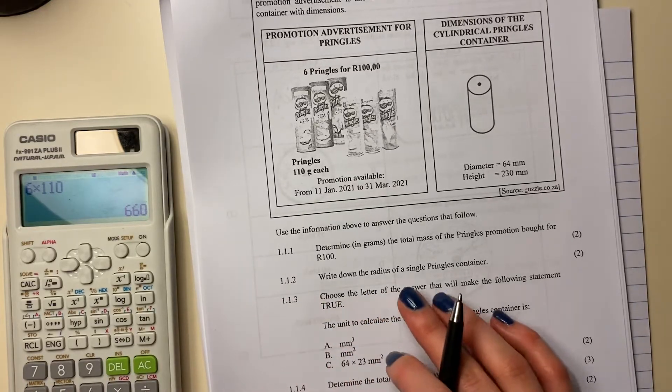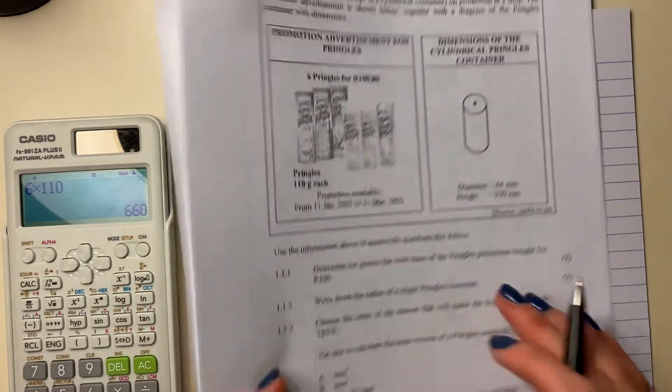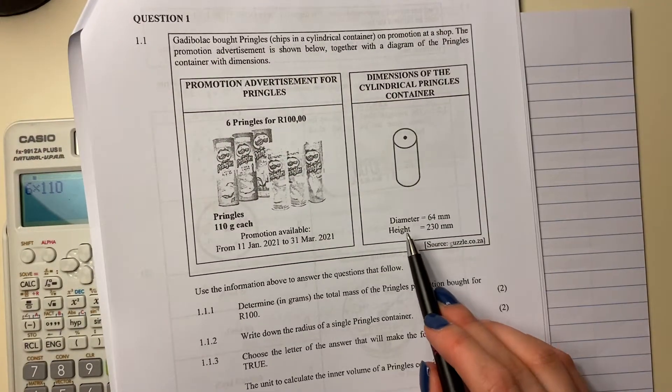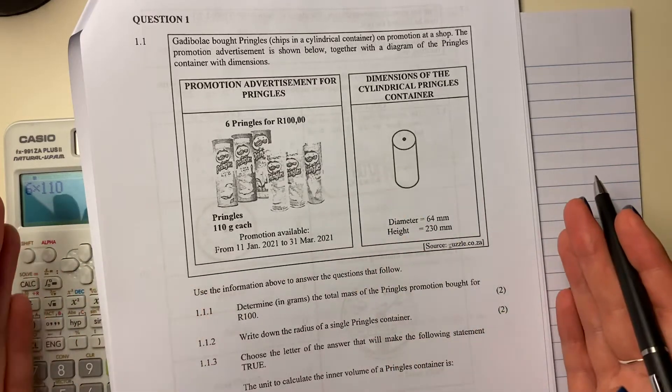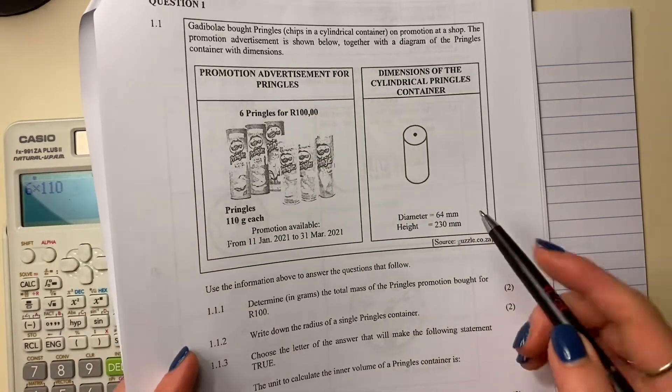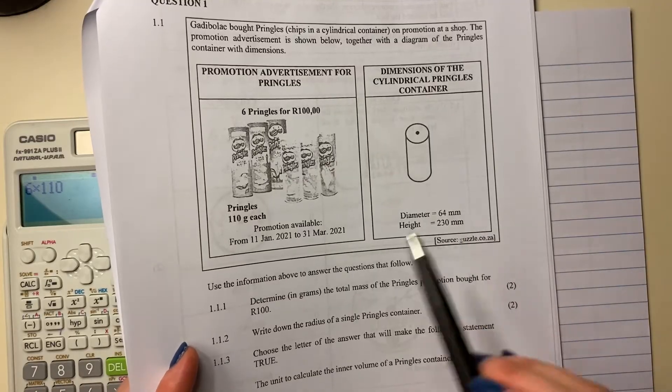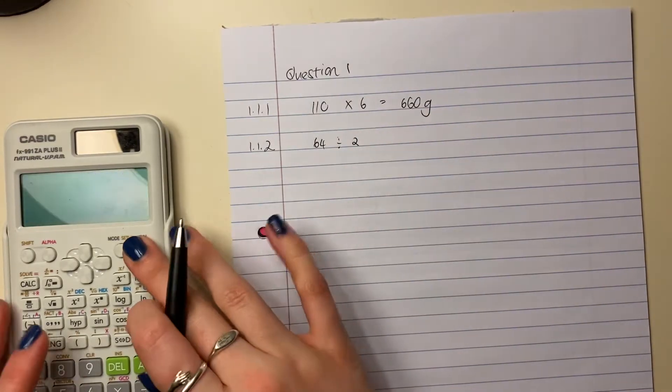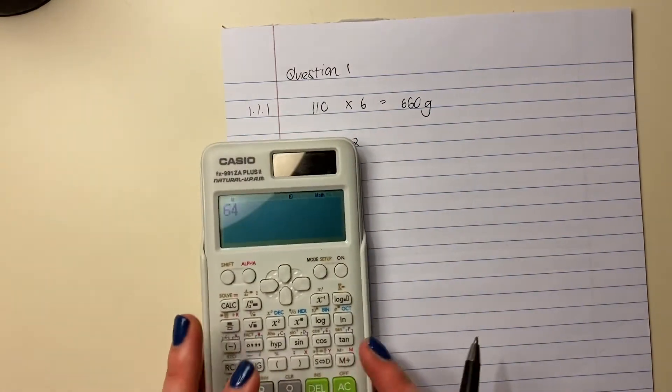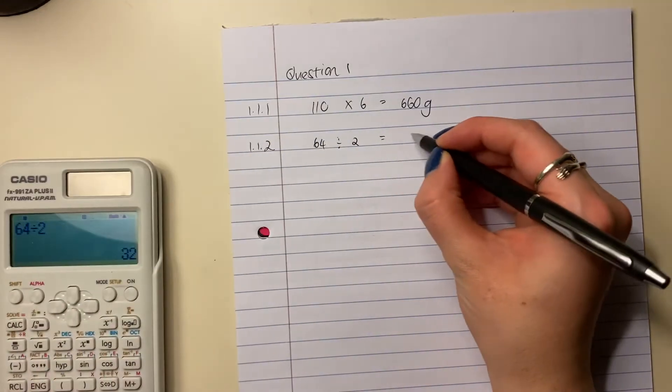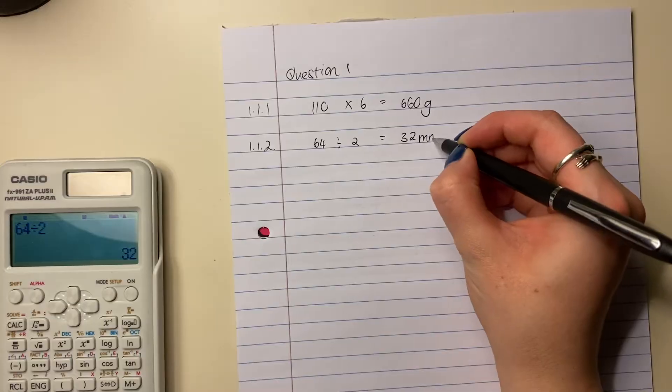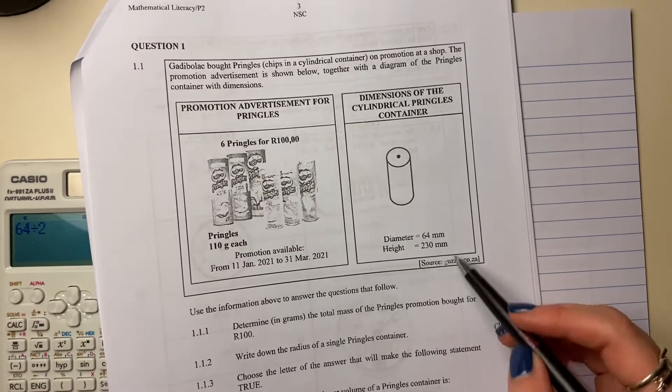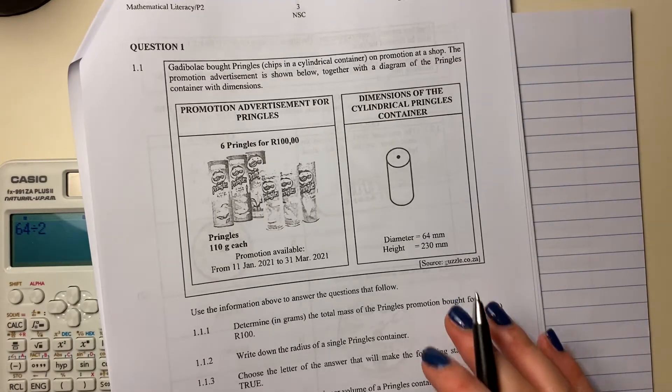1.1.2, write down the radius of a single Pringles container. So 1.1.2. So they've told us what the diameter is. So remember that your radius fits twice into your diameter. So your radius is basically going to be half of your diameter, because two radius gives you one diameter. So you're going to say 64 divided by 2, let me just make sure you can see, divided by 2 equals 32. And make sure that you put in your measurement, there it's millimeters. Sometimes what students do is they mix up all their measurements. Make sure that you are sticking with the one that you're working with.